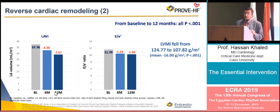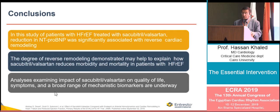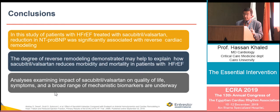The left atrial volume index decreased significantly over 6 months. The E to E' ratio, reflecting diastolic filling on mitral annular velocity, also improved. The study concluded that patients receiving sacubitril/valsartan had significantly reduced BNP associated with reversal of cardiac remodeling. Analysis also examined the impact of sacubitril/valsartan on quality of life, symptoms, and a broad range of mechanical biomarkers.